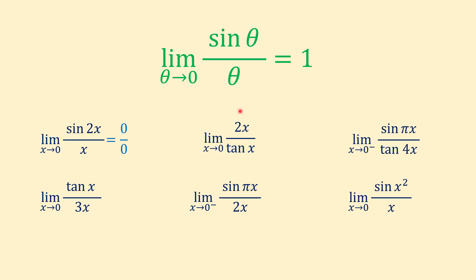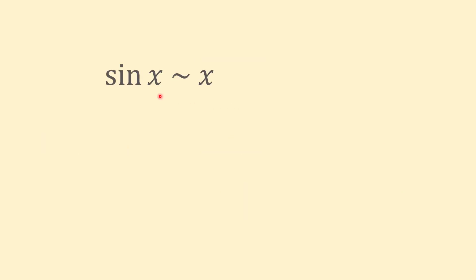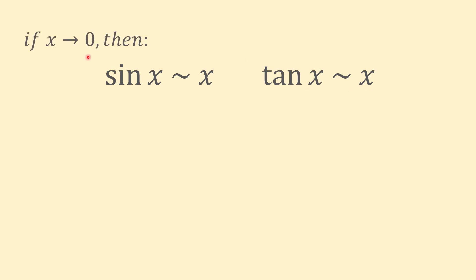Instead of this typical method, I want to show you a shortcut method. In the shortcut method, we replace sine of x with x and tangent of x with x if x approaches 0. With this substitution we get rid of sine and tangent in our limit and easily we can find the value of the limit.